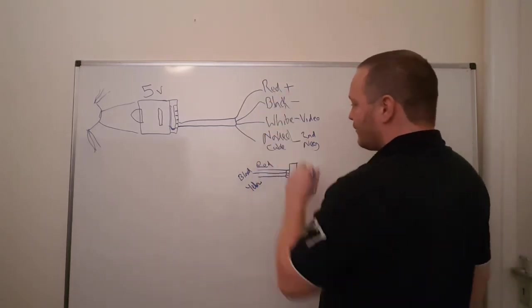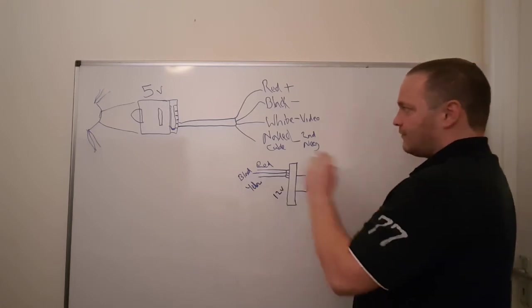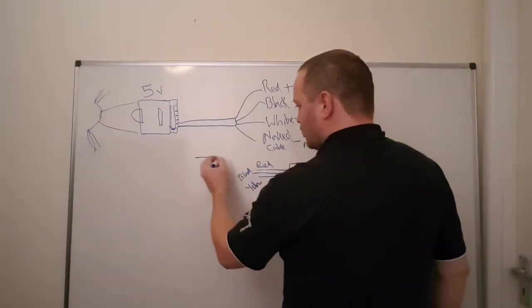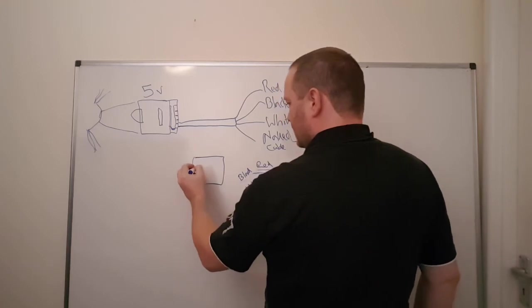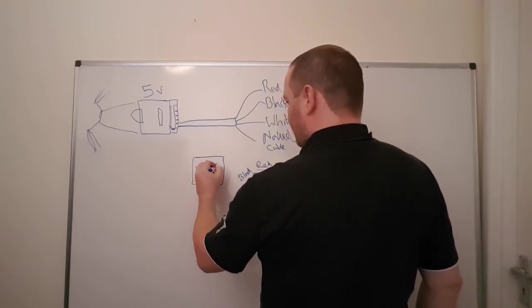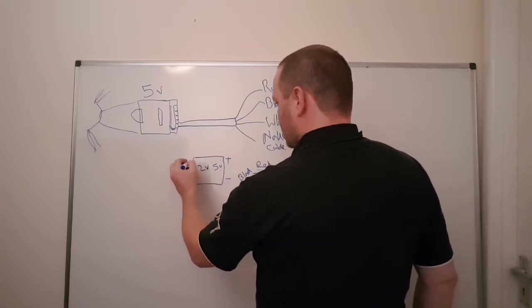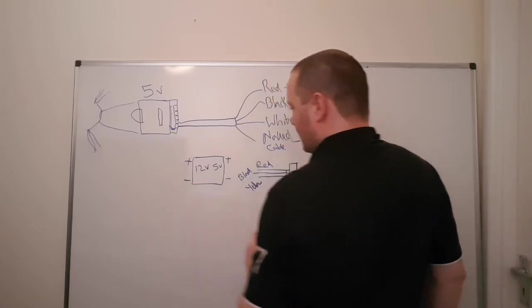So how I've connected this up, because my cameras run on 12 volts, I've taken it this way. I've got a voltage dropper. So that goes 12 volts in and 5 volts out. You've got plus, negative, out, plus, negative, in.